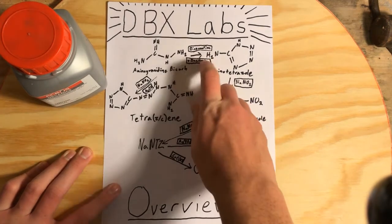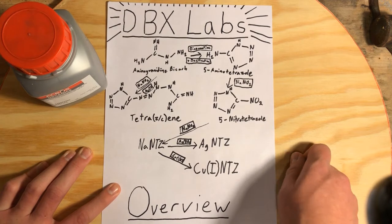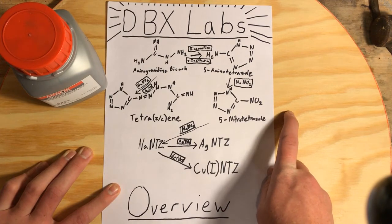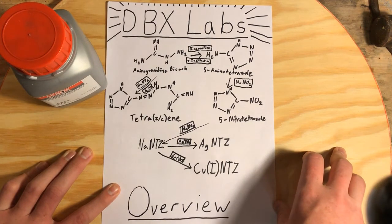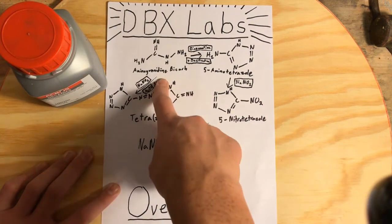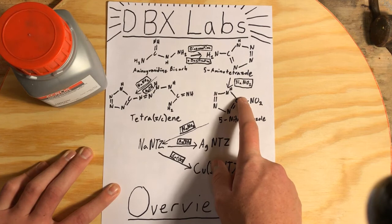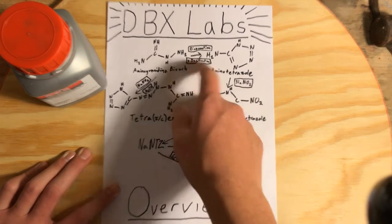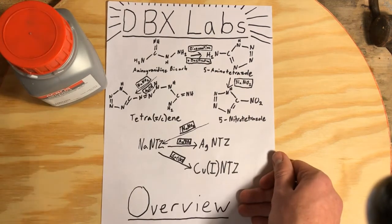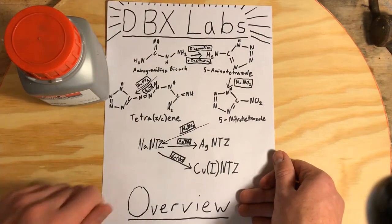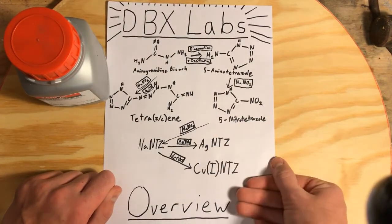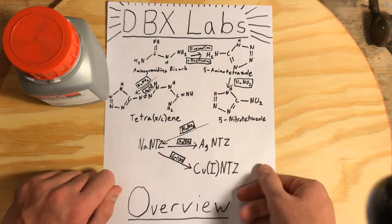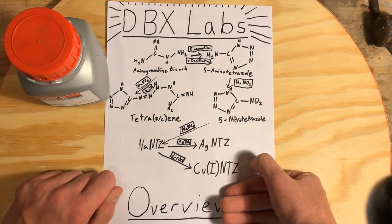To convert the aminoguanidine bicarbonate to 5-aminotetrazole, it's a two-step reaction followed by a reflux. It's a diazotization of the aminoguanidine bicarbonate once it's been converted into a soluble compound. It's going to be reacted with hydrochloric acid — a little bit — to make it soluble in solution. Then it's going to be diazotized by sodium nitrite, which I have right here. That diazotization takes some time, but once that's done, it'll be basified and then refluxed for about two hours until completion.